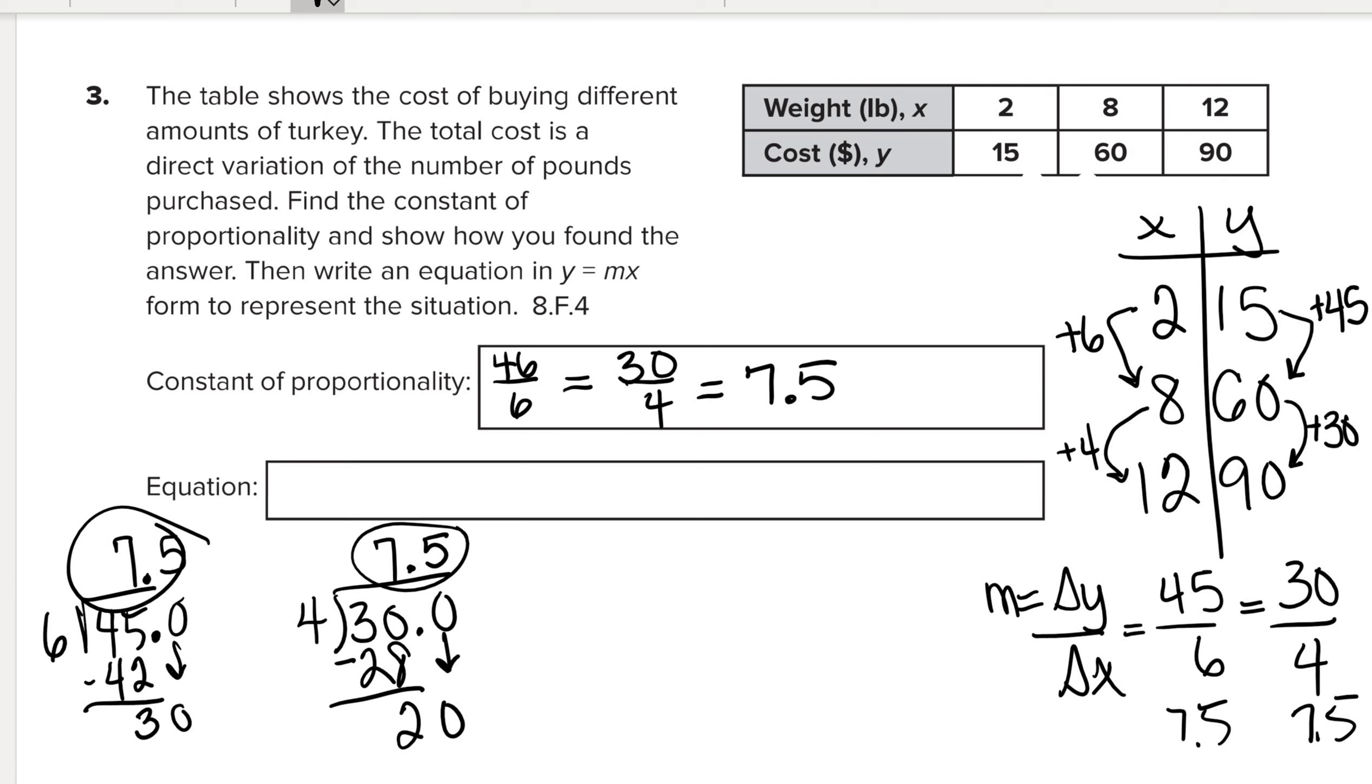And what is the equation? Well, they told us to use y equals mx where the rate of change is your m. So we get y equals 7.5x. And that's my equation. And this is the constant rate of change.